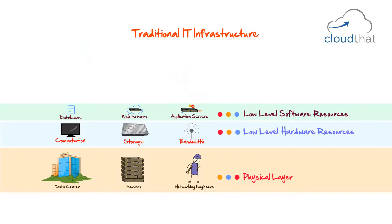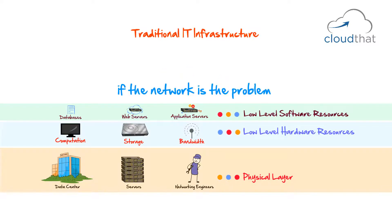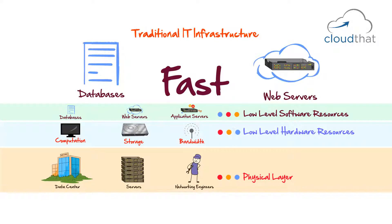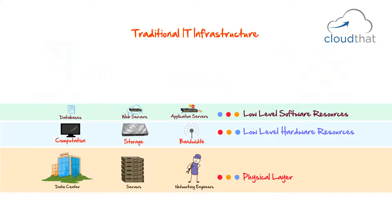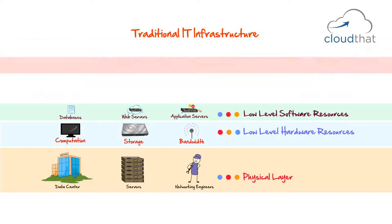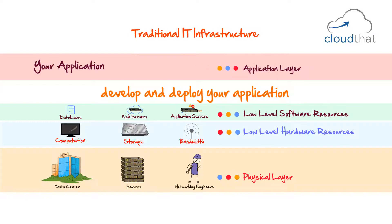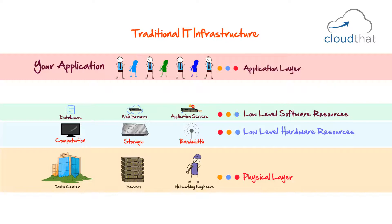If there is a problem such as the database is slow, then they might dig into lower levels and check if the network is the problem or the machine is faulty. As long as the database is fast or the web server is fast enough, they don't really care about how things are laid underneath. Next, you have your application layer. This is where you develop and deploy your applications, and this is where you ideally want most of your developers and testers to spend time. They should not spend time at the layers underneath — that is the goal.